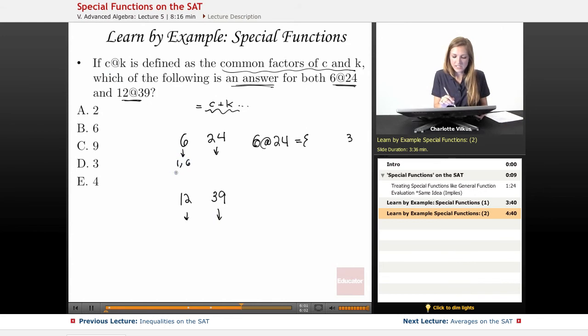Okay, so here factors of 6 are 1 and 6, and 2 and 3. For 24, I've got a bunch of factors. So 1 and 24, 2 and 12, 3 and 8, or 4 and 6.